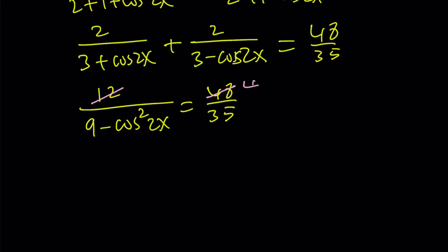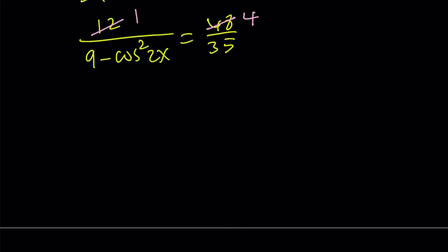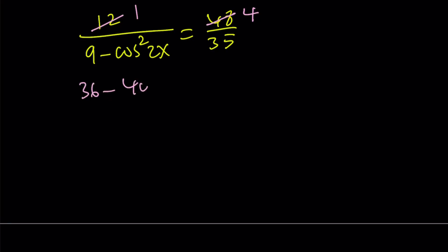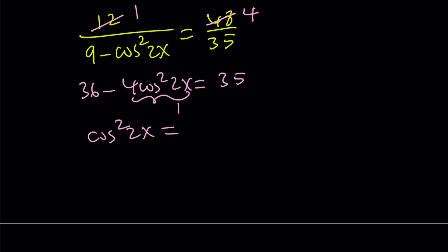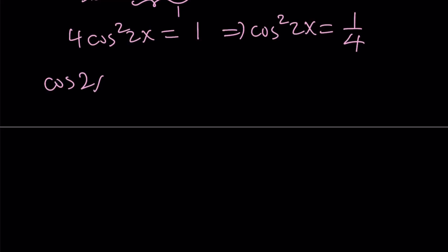Now we simplify: 12 goes into 48 four times, so cross-multiplying gives us 36 minus 4 cosine squared 2x equals 35. From here, 4 cosine squared 2x must equal 1 since 36 minus 1 is 35. So cosine squared 2x equals 1/4. This has two results: cosine 2x equals 1/2, or cosine 2x equals negative 1/2.